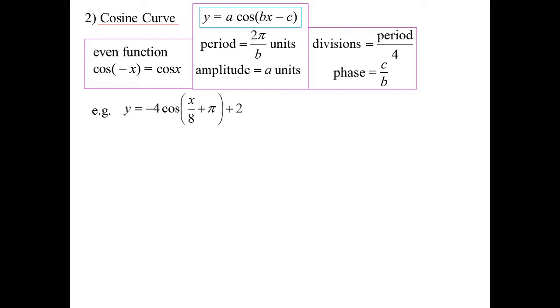Here we go. Minus 4 cos x/8 plus π plus 2. So the period, 16π. Amplitude, 4. We don't say the amplitude's negative 4. Amplitude's like a magnitude, or just the size. Divisions, I'm going to mark off every 4π. So what have we done with the shifting? 8π to the left, 2 up.